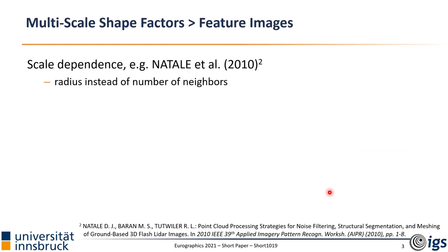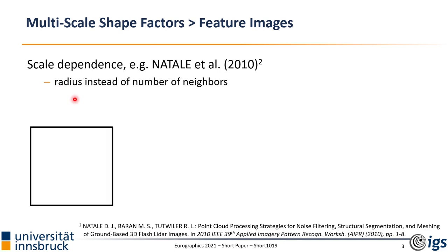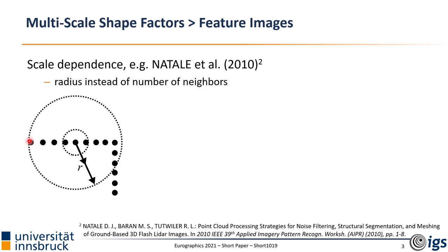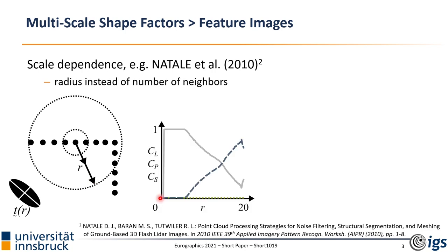Our shape factors only describe a single-scale neighborhood, so we extend them to multi-scale. Similar to the work of Natale, we compute the shape factors over multiple scales. Instead of using the number of neighbors as a parameter, we use the radius. Suppose we have a point cloud in the form of a rectangle — let's inspect the upper right corner. We select the centroid and let the radius grow. For each radius, we compute the second-order tensor covariance. We can illustrate the shape factors over the growing radius using three graphs: the gray line represents linearity, the blue line the planarity, and the green line the sphericity.